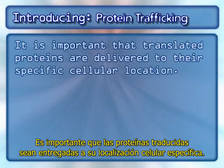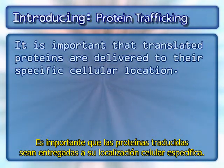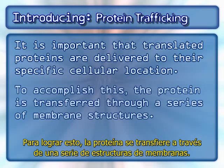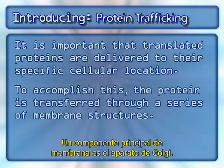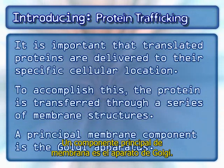It is important that translated proteins are delivered to their specific cellular location. To accomplish this, the protein is transferred through a series of membrane structures. A principal membrane component is the Golgi apparatus.